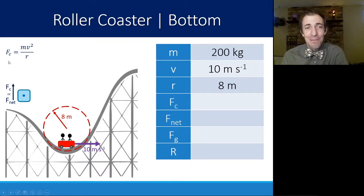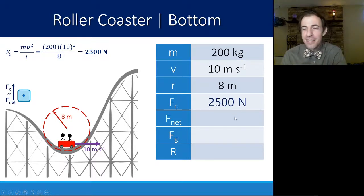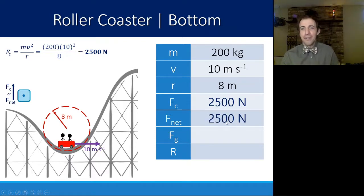This equation is going to be your best friend in this unit. We can calculate that because we know m, v, and r. 200 times 10 squared divided by 8 gives me a centripetal force of 2,500 newtons. Centripetal force and net force are one and the same. So that's also 2,500 newtons.